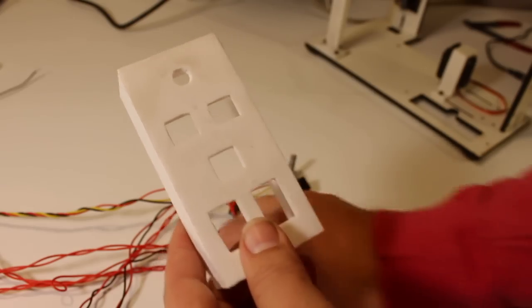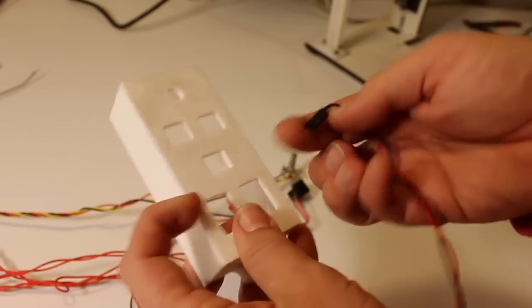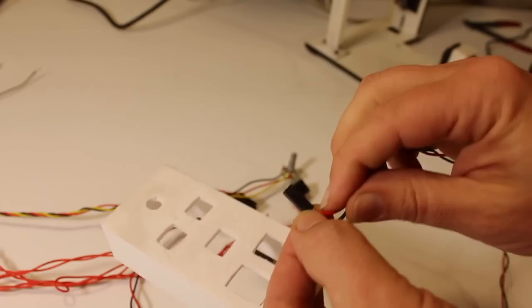Take the control box and start putting the buttons in. Before you do, it's a good idea to label the headers in some way so that you know which button is which.